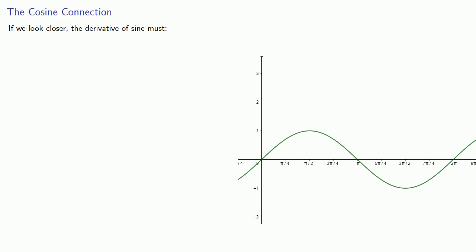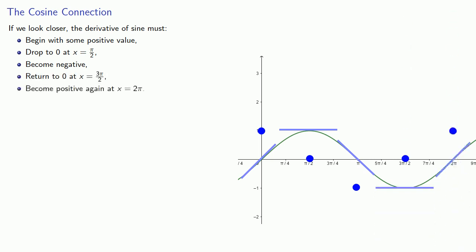Now, if we look a little closer, we see that the derivative of sine must begin with some positive value, drop down to zero at x equals pi halves, become negative, then return to zero at x equals 3 pi halves, and then become positive again at x equals 2 pi. And this suggests the derivative of sine x is something like cosine x.